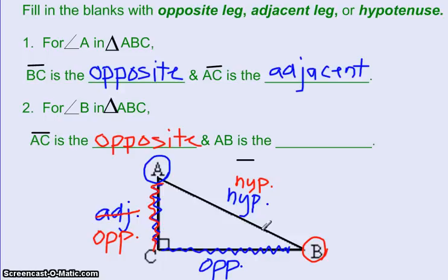And then AB. Well, from the perspective of angle B, side AB is touching angle B, so it's adjacent. But remember, it is even more importantly than being adjacent, it's the hypotenuse.